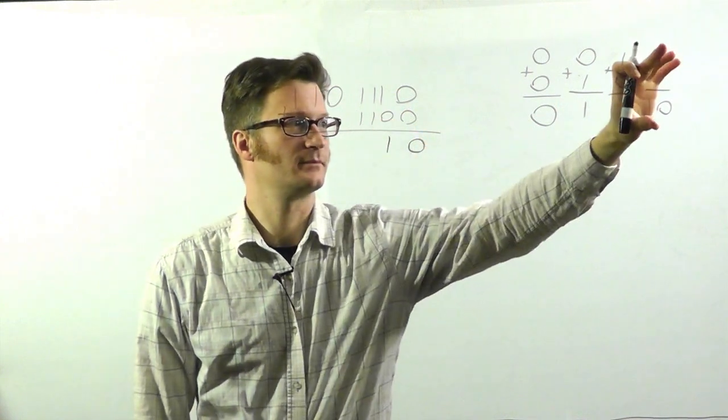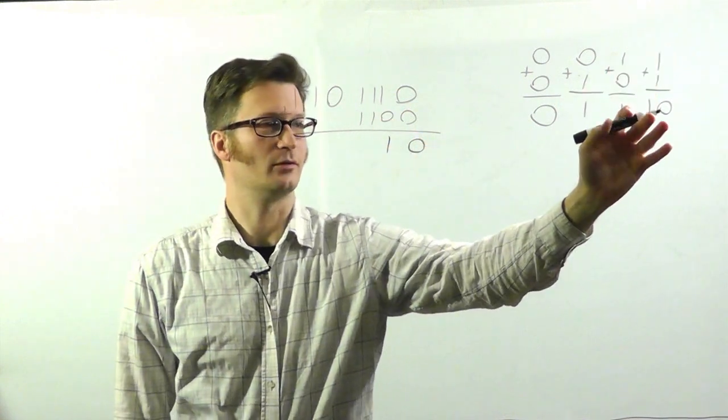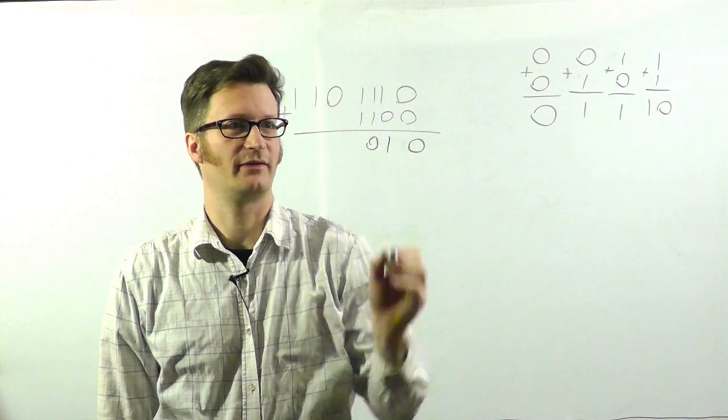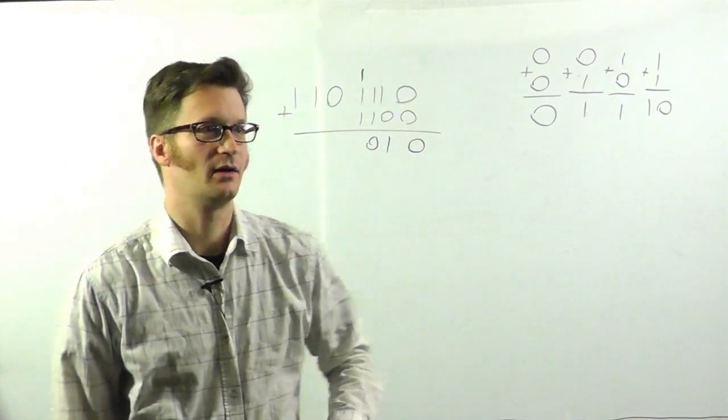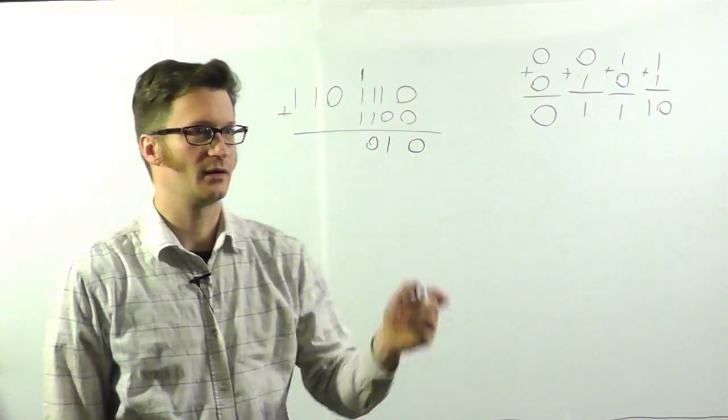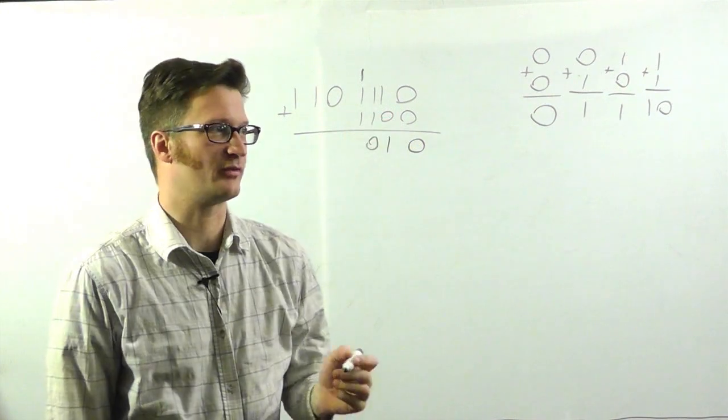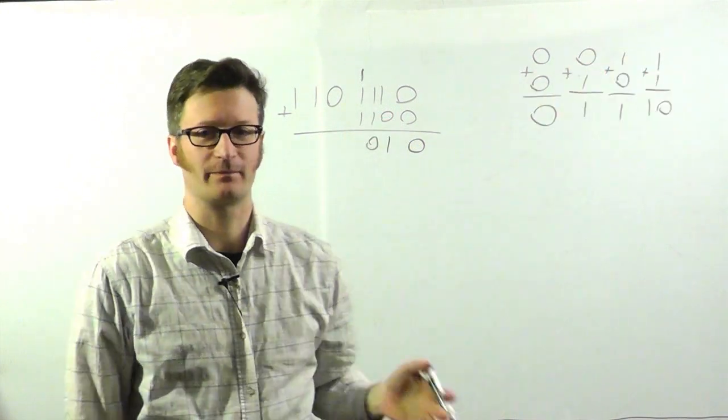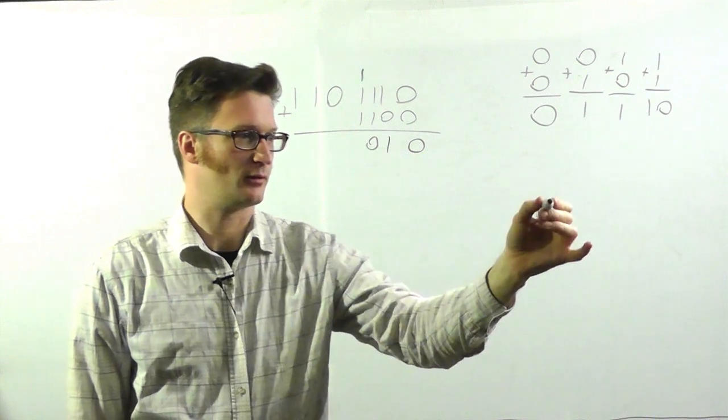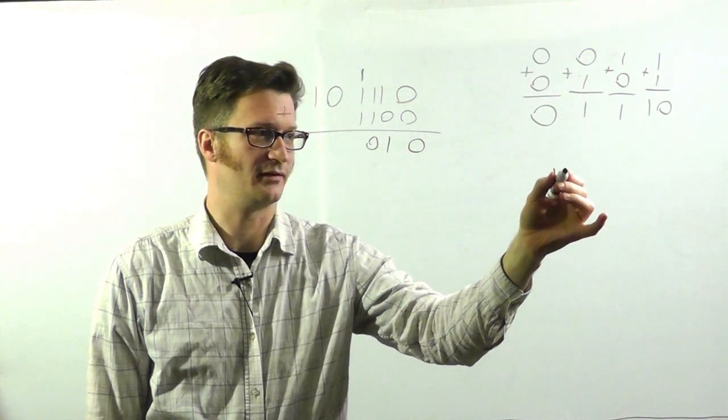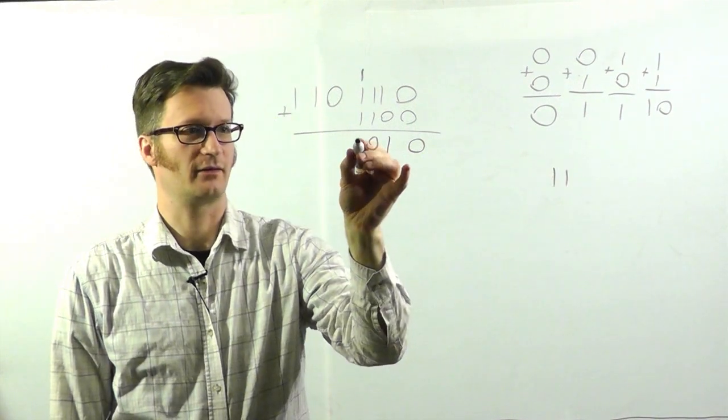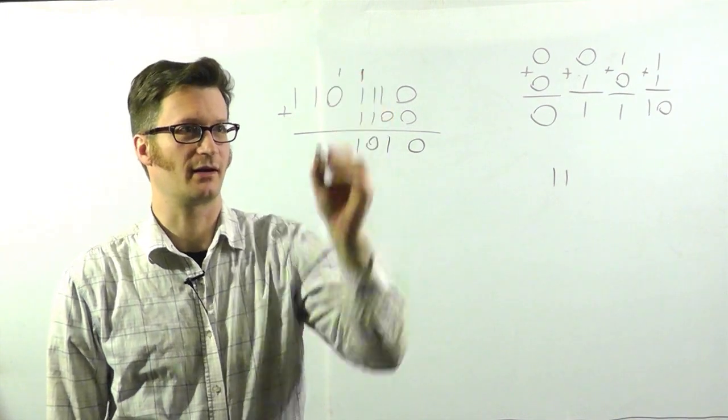1 plus 1, well that's 2, which we put 0 here and we carry over to this column. Now, 1 plus 1 plus 1, which I didn't cover here, is 3. And the way that you represent 3 in binary is 1, 1. So I have a 1 here. I carry a 1.